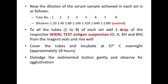The dilution factors are as follows: tube one is 1:20, tube two is 1:40, tube three is 1:80, and the dilution continues doubling up to tube seven, which has a dilution factor of 1:1280. Tube eight is the control.